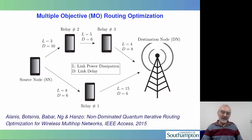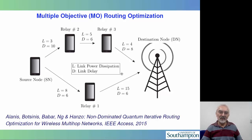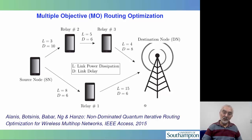In recent years we have created a little sequel of studies on ad hoc networking as well as on mesh networking, looking at multi-objective routing optimization as well as cross-layer operation. Allow me to introduce the basic concepts briefly and then move on to the benefits of hierarchical modulation in the context of networking. In this first study in the IEEE Access Journal, we looked at the optimization of delay as well as power consumption. Ultimately we used an advanced non-dominated quantum iterative routing to strike a balance across three conflicting design objectives, finding the so-called optimum Pareto fronts.